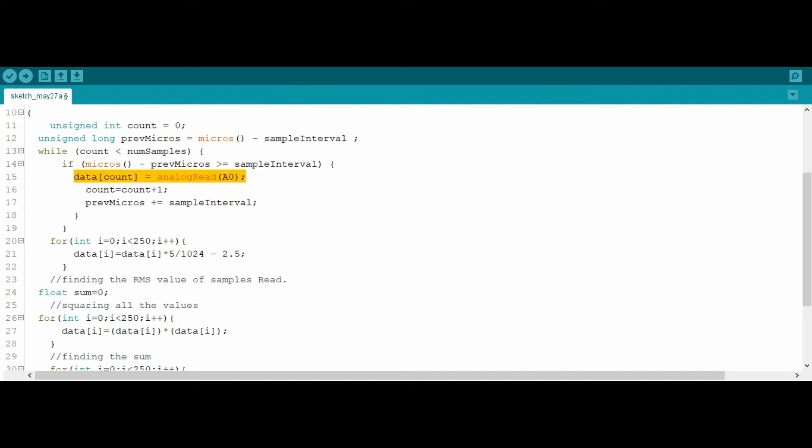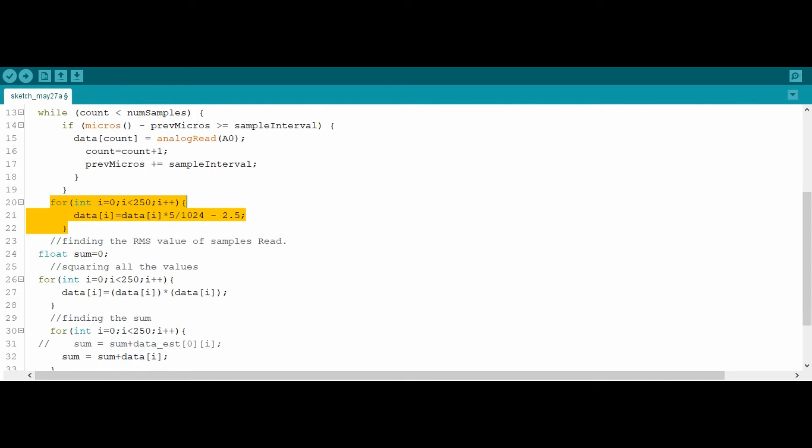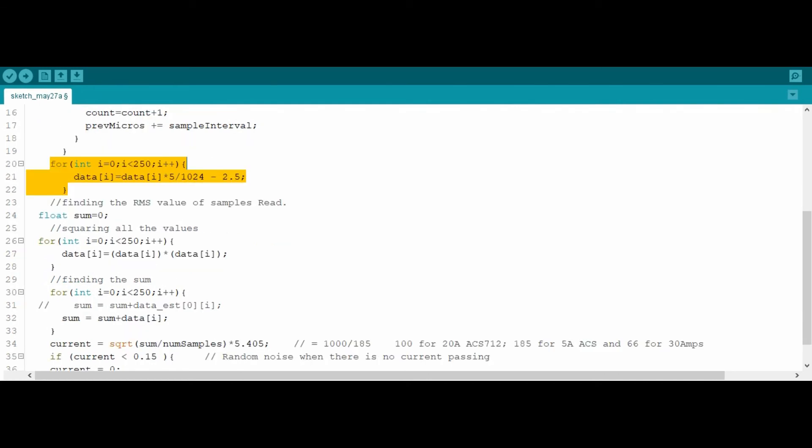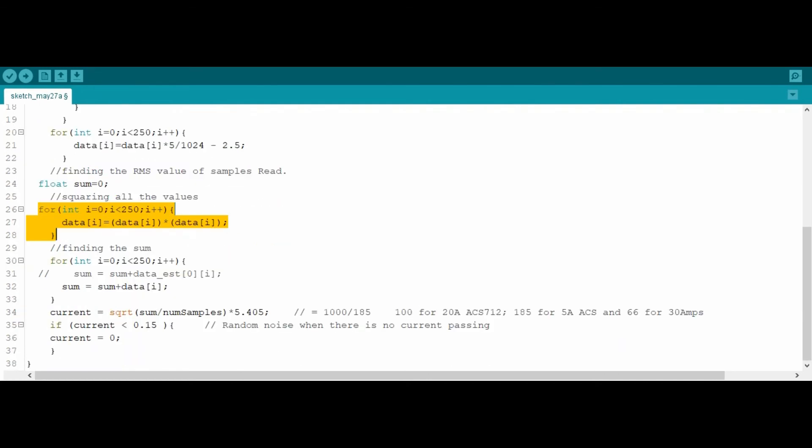Because if we start performing the calculations right away, this will disturb the sampling time of microcontroller and hence we will get unwanted results. Then we perform the necessary operations in the for loop and then we simply calculate the RMS of all the samples.